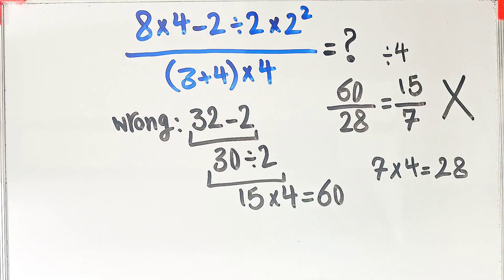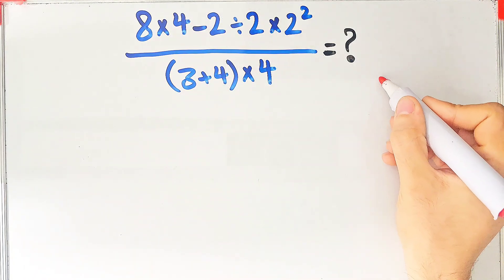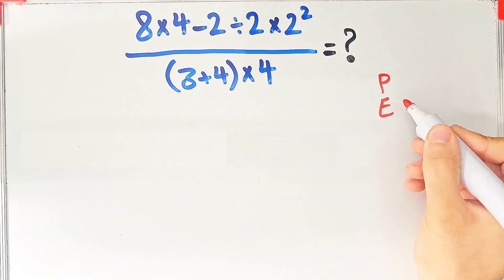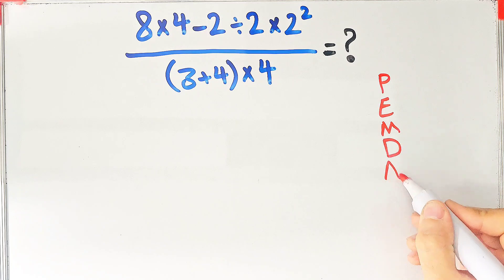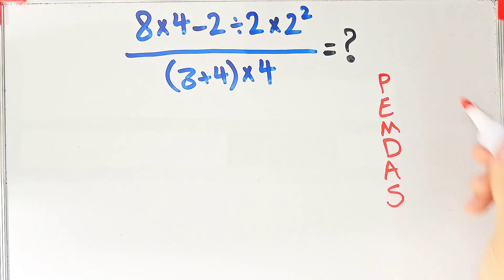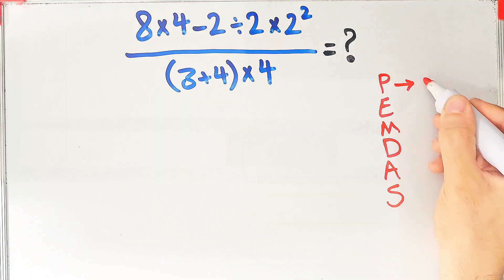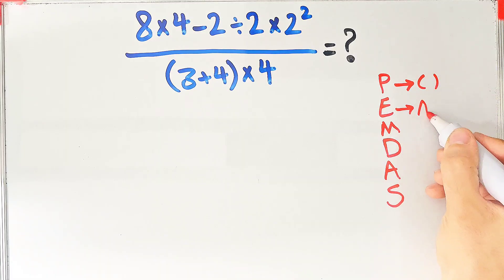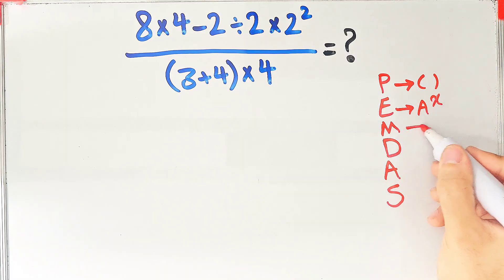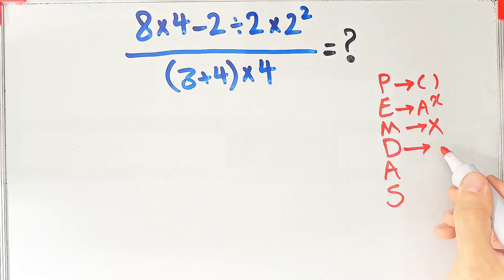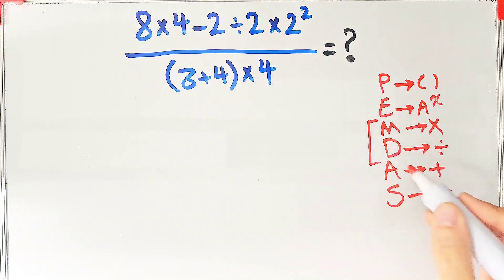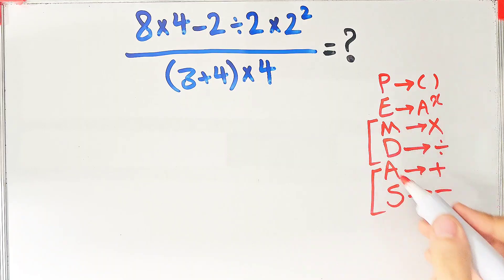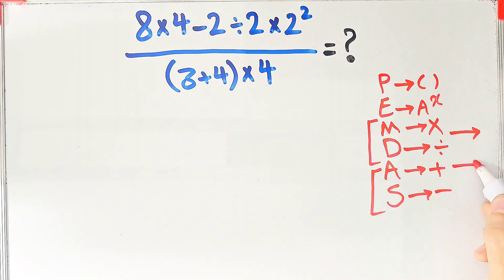Let's solve this question step by step together. To solve this question we need to follow the order of operations, which is PEMDAS. PEMDAS shows the priority of mathematical operations, and if you don't pay attention to this rule you get the wrong answer. P stands for parentheses, E for exponent, M for multiplication, D for division, A for addition, and S for subtraction. Multiplication and division have the same level of priority; addition and subtraction also share the same priority, and when we have both we start from the left and simplify.